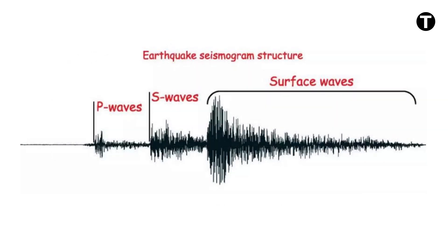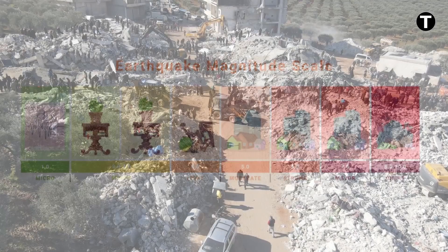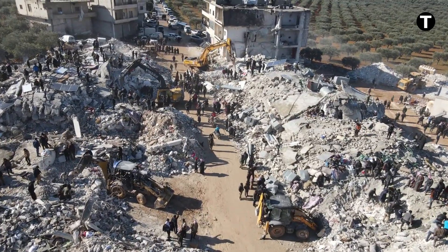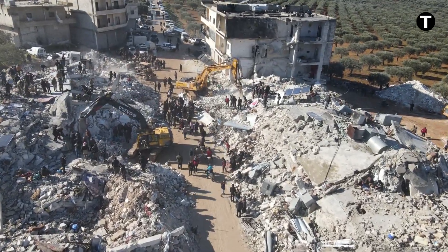Measuring earthquakes is crucial to understanding their impact. The magnitude of an earthquake represents the energy it releases and can be measured using different scales, including the Richter scale and the moment magnitude scale. The media often use the term Richter scale, but this is not entirely correct — the Richter scale is a local scale especially adapted to Californian earthquakes. The magnitudes usually cited nowadays are in fact moment magnitudes. Magnitude and intensity are not the same; intensity measures the damage caused. Earthquakes vary in magnitude, frequency, and their effects, and their impact can be felt worldwide.